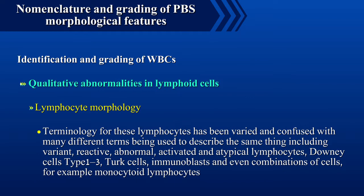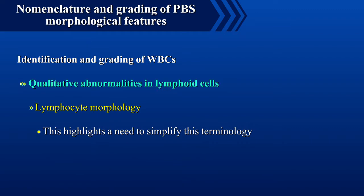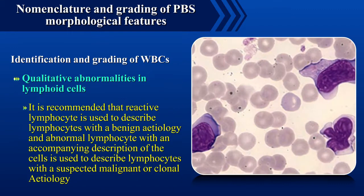Terminology for lymphocytes has been varied and confused, with many different terms used to describe the same thing, including variant, reactive, abnormal, activated and atypical lymphocytes, Downy cells type 1 to 3, Türk cells, immunoblasts, and even combination terms such as monocytoid lymphocytes. It is recommended that 'reactive lymphocytes' be used to describe lymphocytes with a benign etiology, and 'abnormal lymphocytes' with an accompanying description be used to describe lymphocytes with a suspected malignant or clonal etiology.